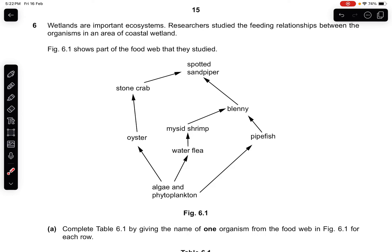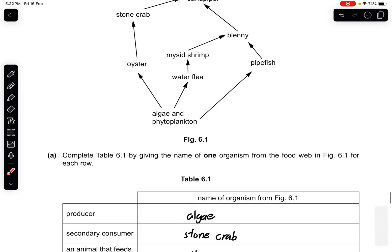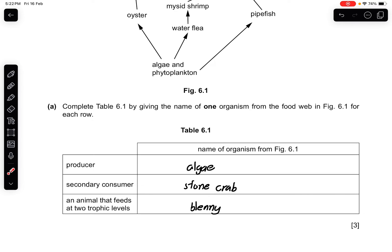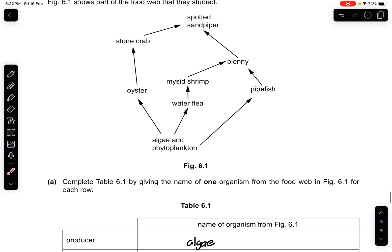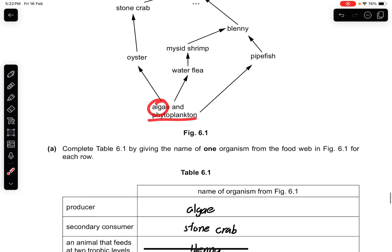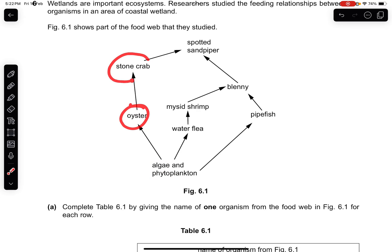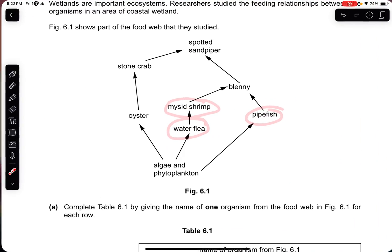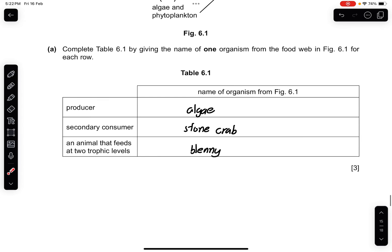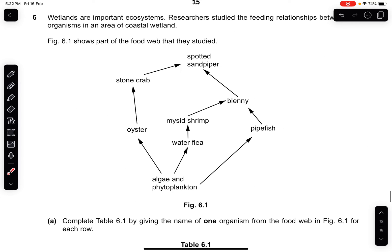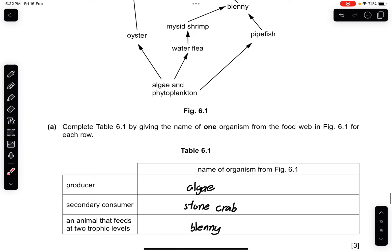Question 6: wetlands are important ecosystems. Researchers studied the feeding relationships between organisms in a coastal wetland. Figure 6.1 shows part of the food web. Complete Table 6.1 by giving one organism for each row: the producer is algae or phytoplankton; a secondary consumer is the stone crab; and an animal that feeds at two trophic levels is the blenny or the spotted sandpiper.